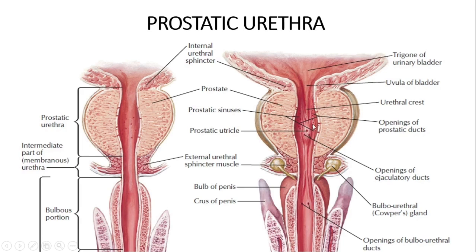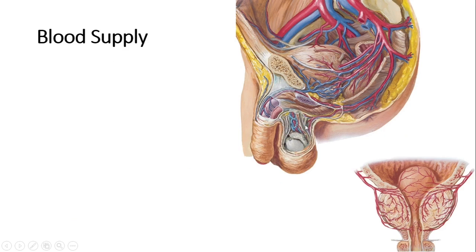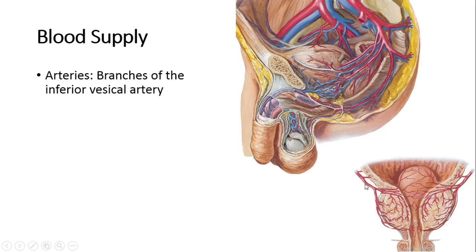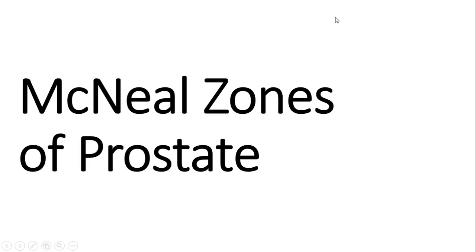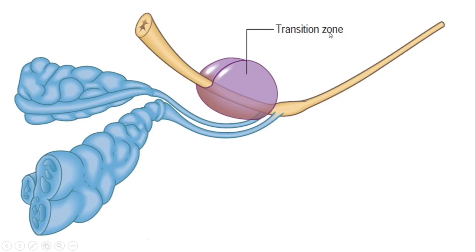On either side of the seminal colliculus lies the prostatic sinus, where the prostatic ducts open. Let us talk about the blood supply. The prostate is supplied by the inferior vesical artery. Venous blood from the prostate is drained by the prostatic venous plexus, which is the continuation of the dorsal vein of the penis, and this plexus drains into the internal iliac vein.